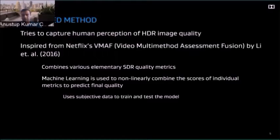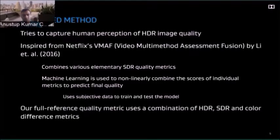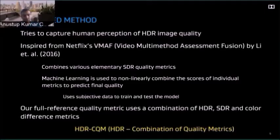The advantage of this approach is that it leverages the strength of individual quality metrics. In our work, we use a combination of HDR, SDR, and color difference metrics, and for now we only look at still images. We call our metric HDR CQM, where CQM stands for Combination of Quality Metrics — essentially a suite of metrics combined together.